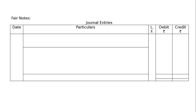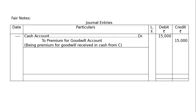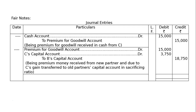Now writing journal entries in proper format. First entry: Cash Account debited to Premium for Goodwill Account — Rs. 15,000 each in debit and credit columns, being premium for goodwill received in cash from D. Next entry: Premium for Goodwill Account debited Rs. 15,000, C's Capital Account debited Rs. 3,750 in the debit column, to B's Capital Account Rs. 18,750.